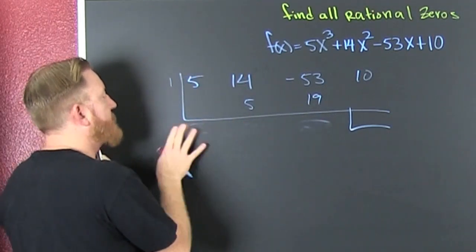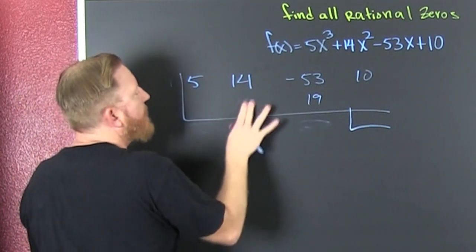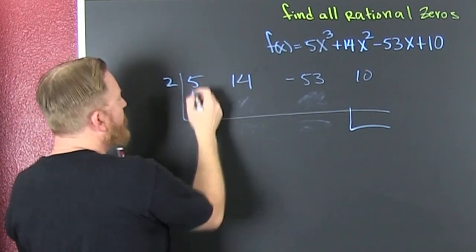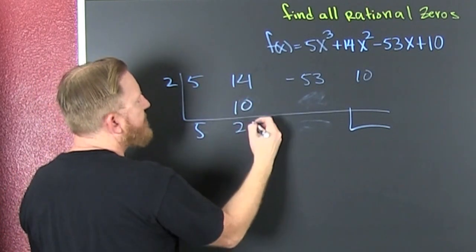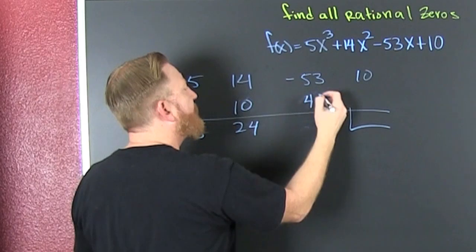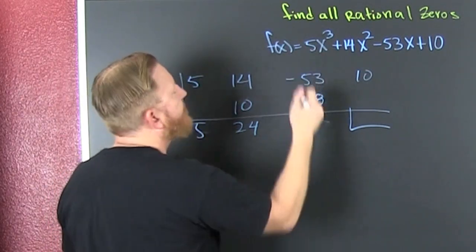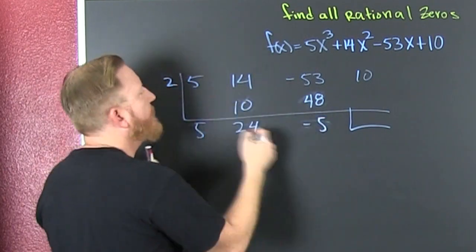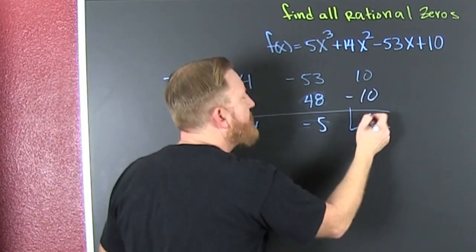So I'm going to go to the next nice one — maybe 2. So then: that's a 5, that's 10, that's 24, that's 48... 1, 2, 3, 4, 5. And it's negative. So that's a minus 10. Then — oh — zero! So what does that mean?